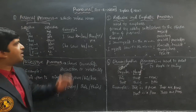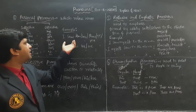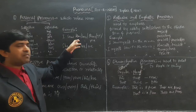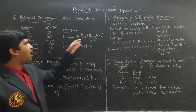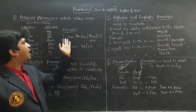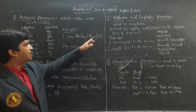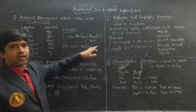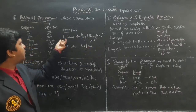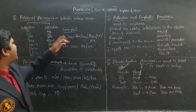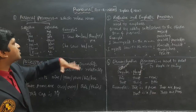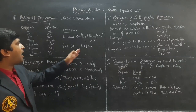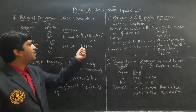See the example, then you can understand easily: I saw him, I saw her, I saw them, I saw it, I saw you. You can also replace the subject: she saw us and me.